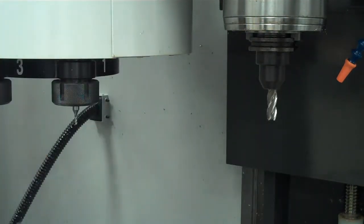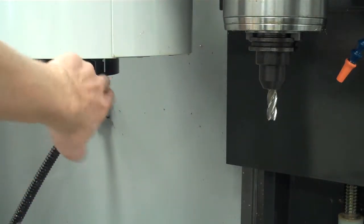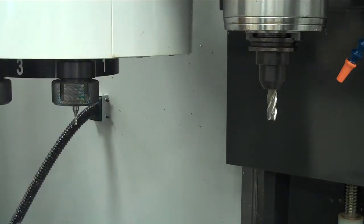We can actually see the number 1 over here, the number 3, and that's how we know which tools are in the carousel. Now I knew that these tools were in here, and so when I designed my program, I made my spot drill be tool number 6 and my quarter inch drill be tool number 7.